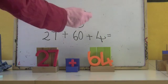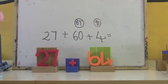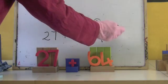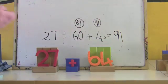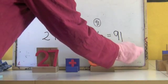I've got to here, and the answer was 91. So 27 plus 60 plus four is 91. 27 plus 64 is 91.